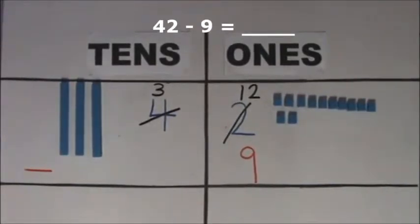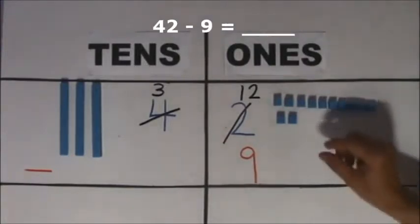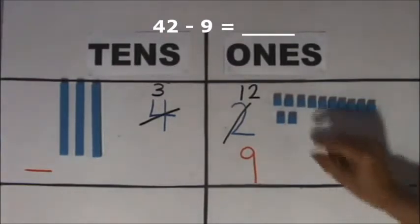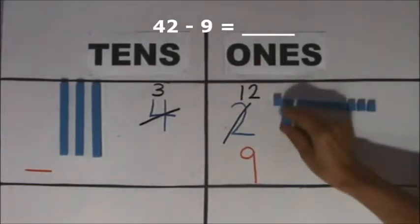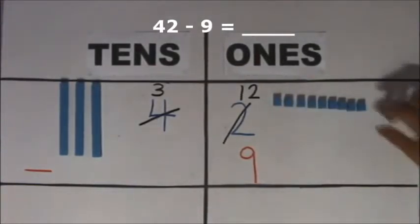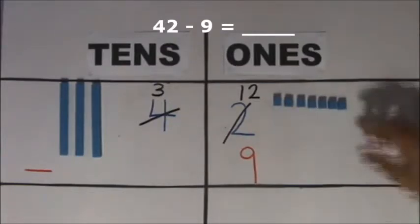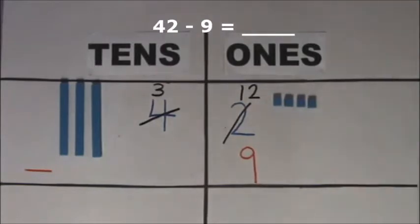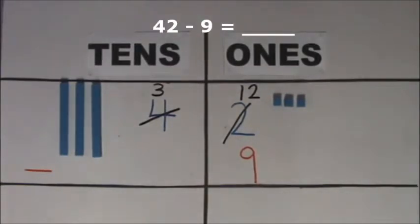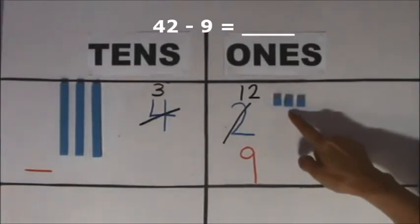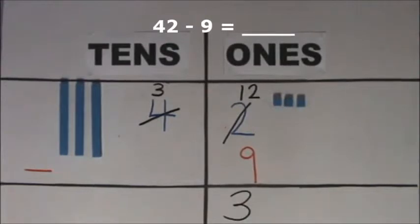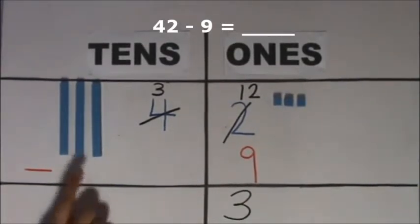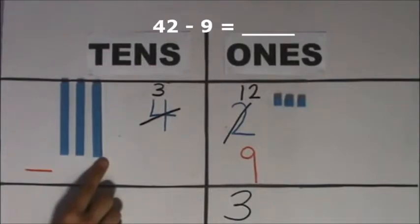Now we have enough ones to take away 9 ones. Take away 9 ones from 12 ones. Take away 1, 2, 3, 4, 5, 6, 7, 8, 9. How many ones do we have left? We have 3 ones left.